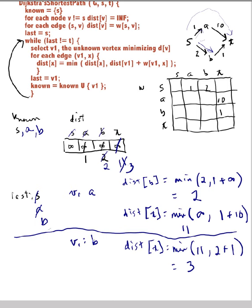So I'm done with that. Okay, so my last is now B. I need to select the unknown vertex minimizing distance, and the only unknown vertex is T. So I'm going to choose T, so v1 is T. For every edge I've got T - T goes to every other edge - there's nothing else there, so this is done without accomplishing anything. Last is now T, known is known union T. So we had T on there, loop back up. Last not equal to T, which fails, so I drop out of the loop and I'm done.